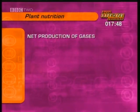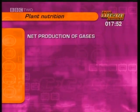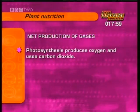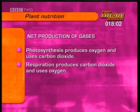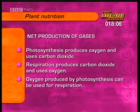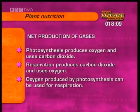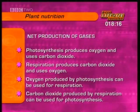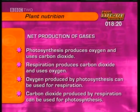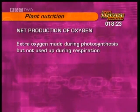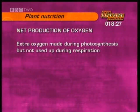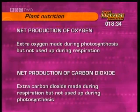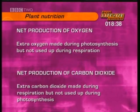For higher tier science, you also need to know about the net production of oxygen and carbon dioxide by plants. A plant carrying out photosynthesis produces oxygen and uses carbon dioxide. When it's respiring, it produces carbon dioxide and uses oxygen. When both processes happen together, some of the oxygen produced by photosynthesis can be used by the cells for respiration, and some of the carbon dioxide produced by respiration can be used by the cells for photosynthesis. The net production of oxygen is the extra oxygen made during photosynthesis that is not used up during respiration. The net production of carbon dioxide is the extra carbon dioxide made during respiration that is not used up by photosynthesis.